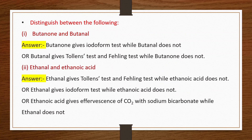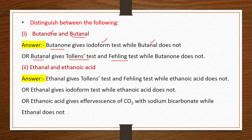To distinguish butanone from butanol: butanone (CH₃COCH₂CH₃) is a methyl ketone, so it gives the iodoform test while butanol does not. Alternatively, butanal gives Tollens test and Fehling's test while butanone does not.